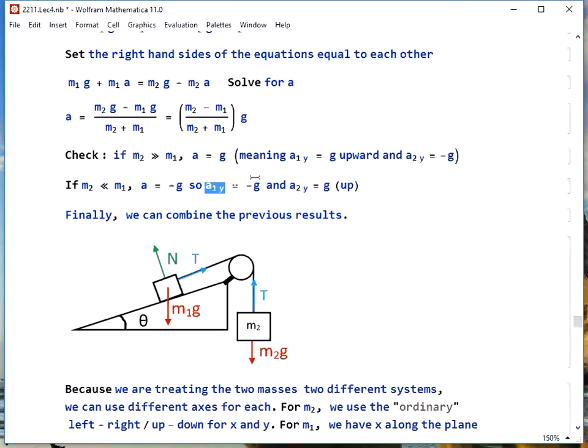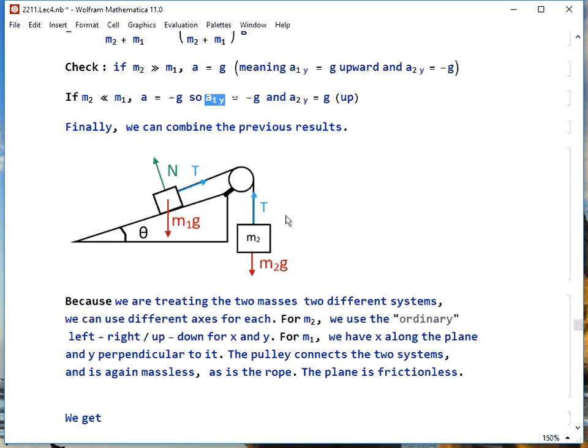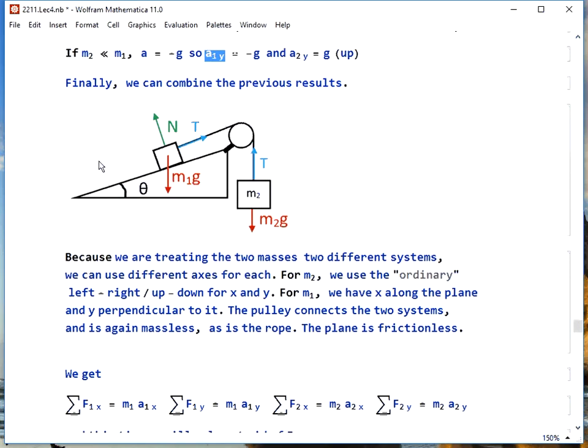We can combine the two problems we've done before into one even more interesting problem, where we have mass m1 sitting on a frictionless inclined plane connected by a massless rope that goes over a massless pulley to mass m2, which hangs off of the high end of it. Because we have two separate systems here, we can actually use two separate coordinate systems to make life easier, and we use a system that goes along the plane and perpendicular to it for m1, and the regular up-down-left-right system for m2. The rope and the pulley connect the two systems.